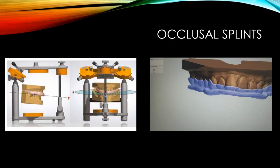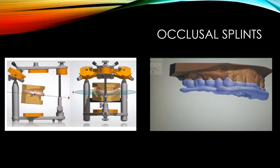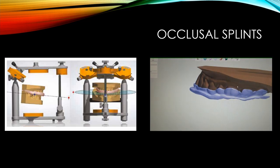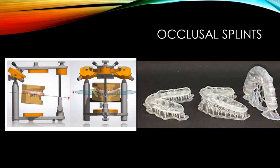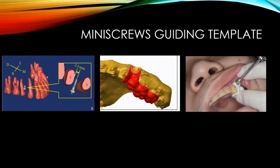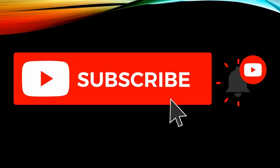You can also 3D print occlusal splints designed virtually on the computer, even checking them on a virtual articulator before printing them in clear resin. Finally, 3D printing can be used to create guiding templates for miniscrews. A CBCT is used to visualize the teeth and plan miniscrew placement, then a guide is designed on the computer, 3D printed, and used intraorally. That concludes today's presentation — I hope you liked it, please consider subscribing, and I'll see you in another video.